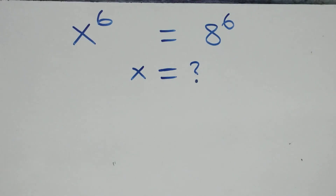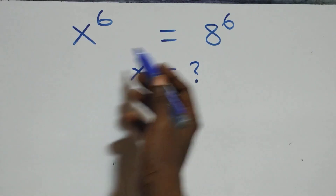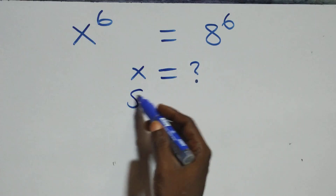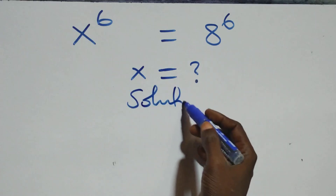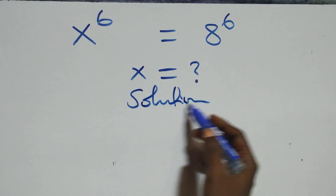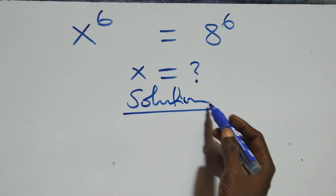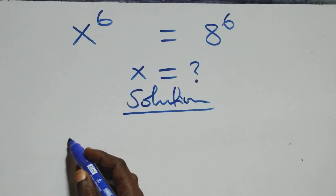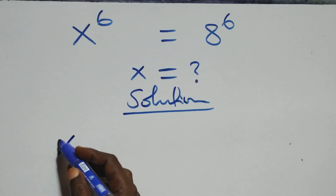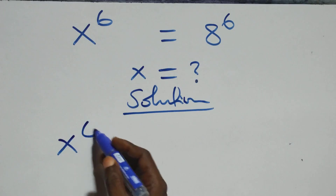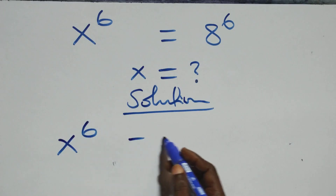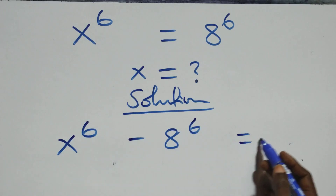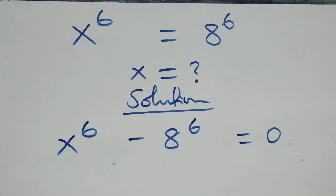Hello, you are welcome! How to solve this nice exponential equation. What we have here: we take a raised to the power 6 to the left hand side and we have x raised to the power 6 minus a raised to the power 6 equals to 0.